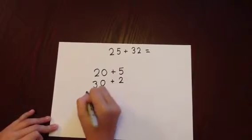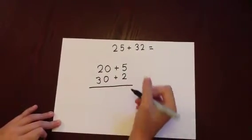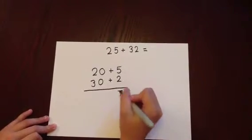As with column addition, we always begin with the units. 5 add 2 is 7.